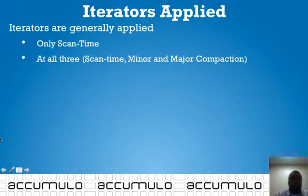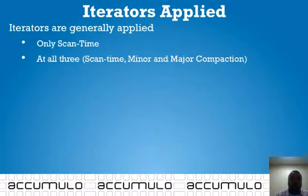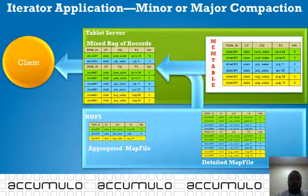Here's a rule of thumb to consider. Typically, iterators are only applied at scan time only, or they are applied at all three: scan time, minor compaction, and major compaction. You might wonder why that's the case.